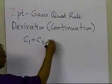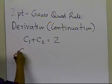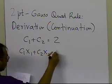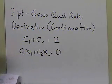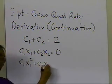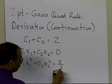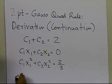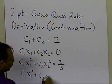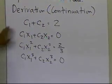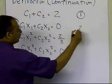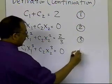We had: c1 plus c2 equal to 2 (equation 1), c1·x1 plus c2·x2 equal to 0 (equation 2), c1·x1² plus c2·x2² equal to 2/3 (equation 3), and c1·x1³ plus c2·x2³ equal to 0 (equation 4). So we had these four equations and four unknowns.